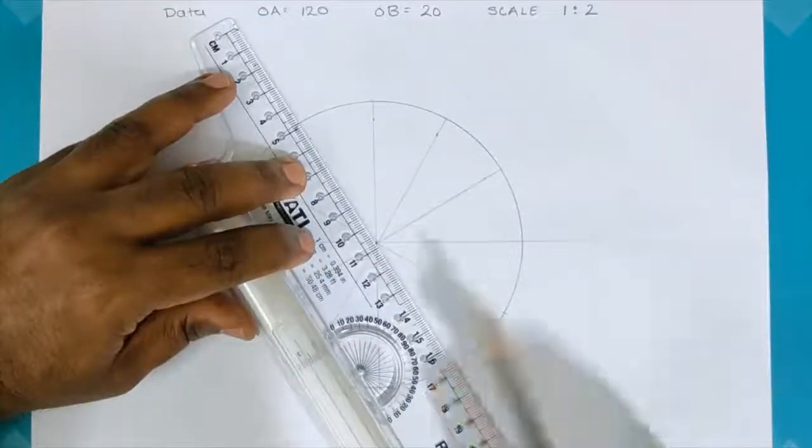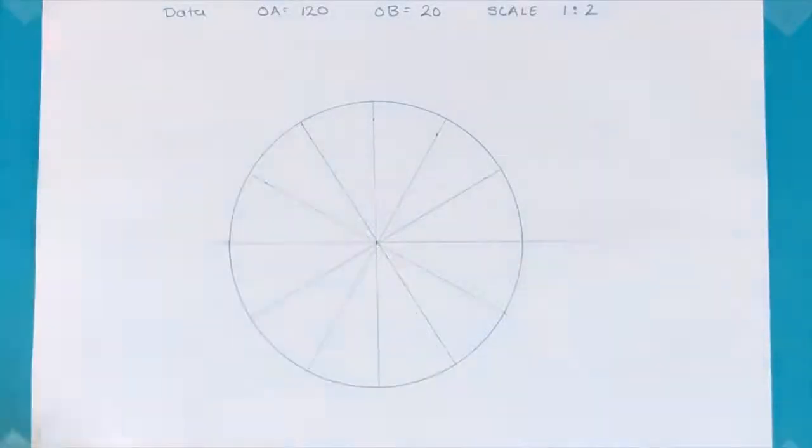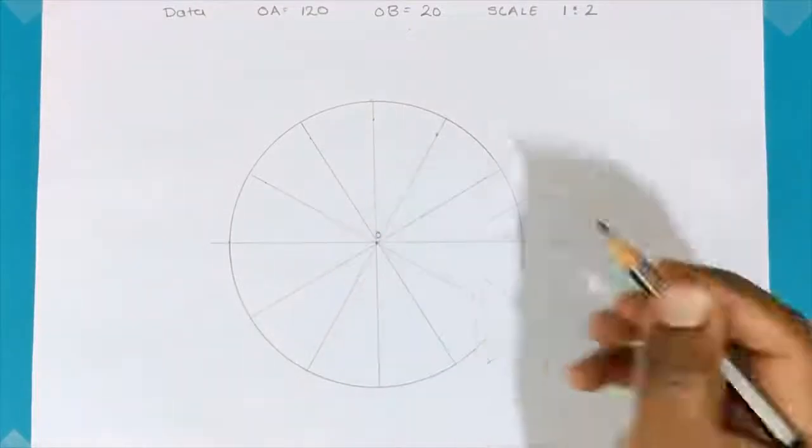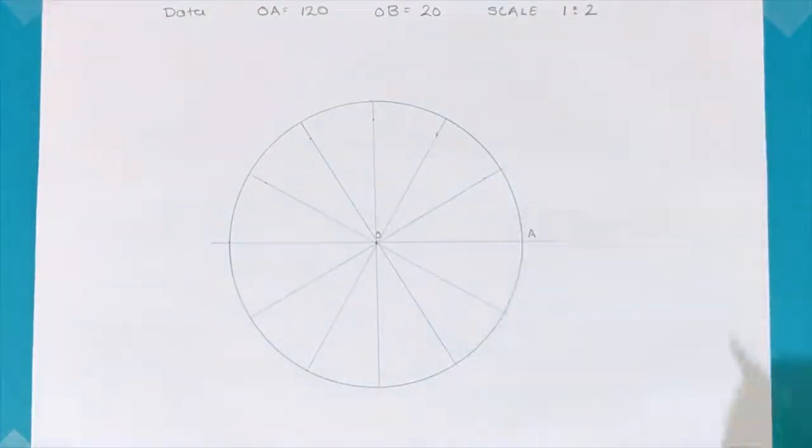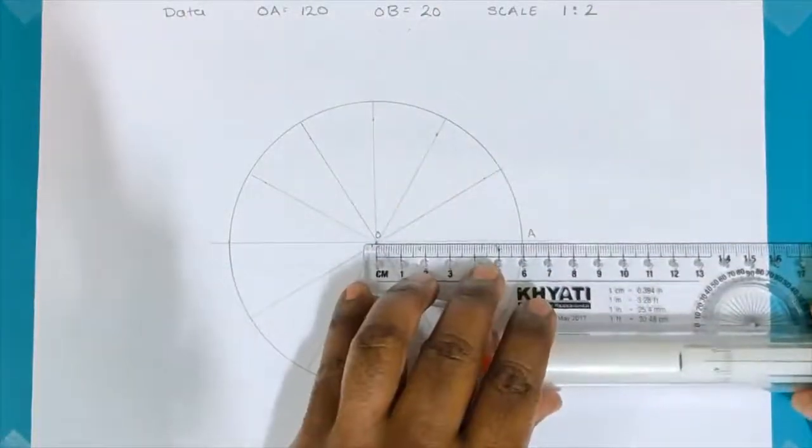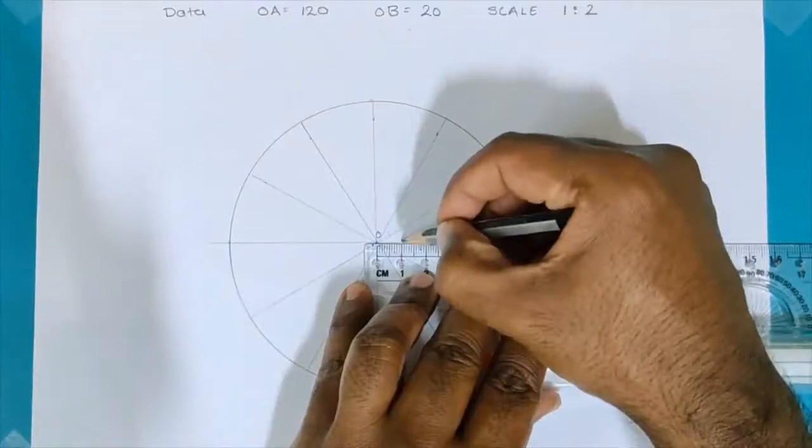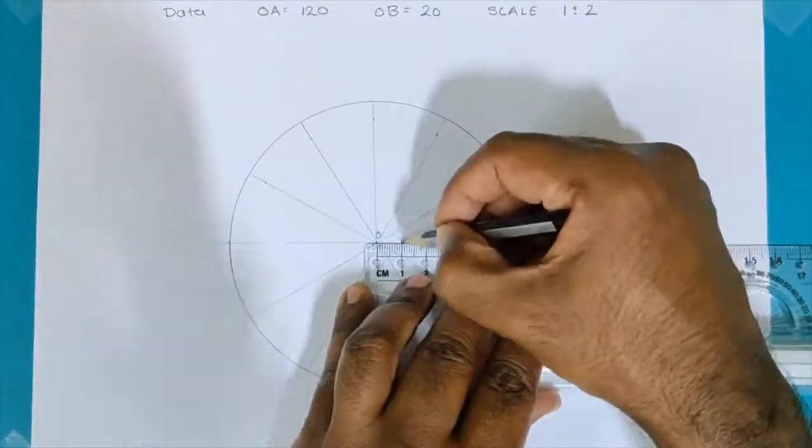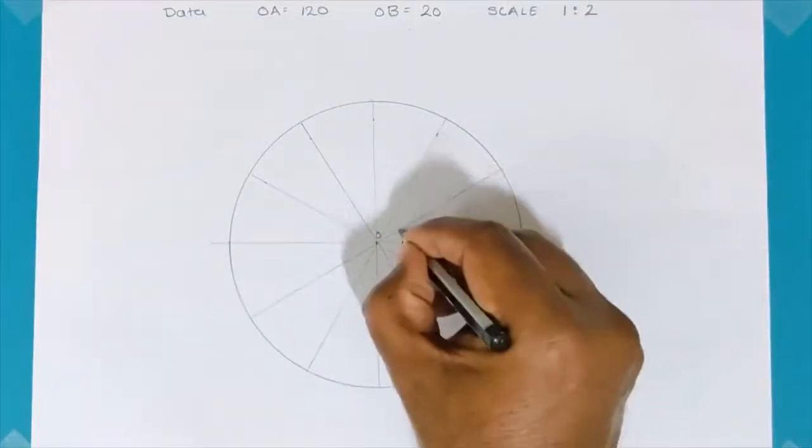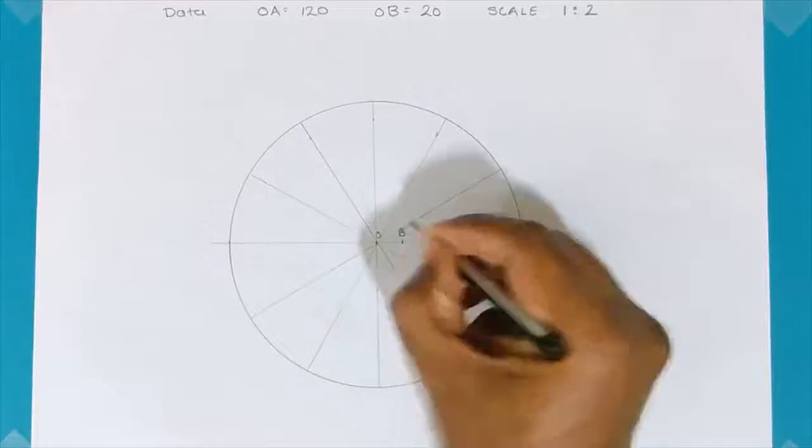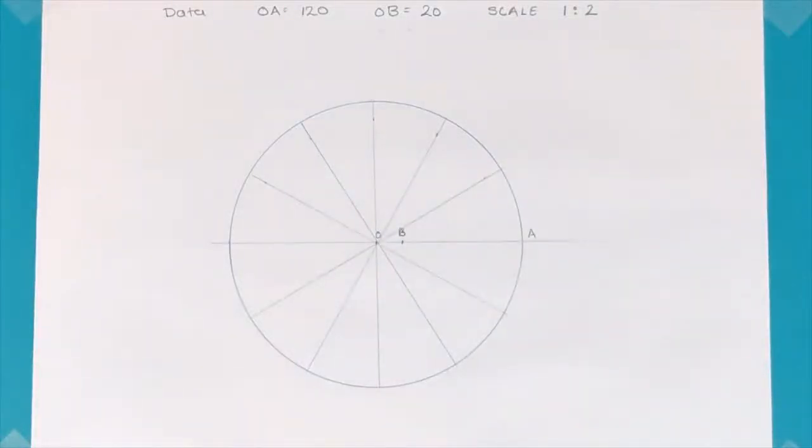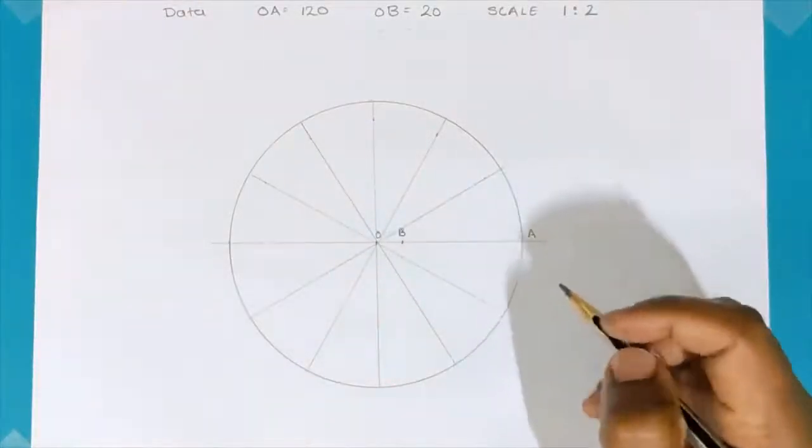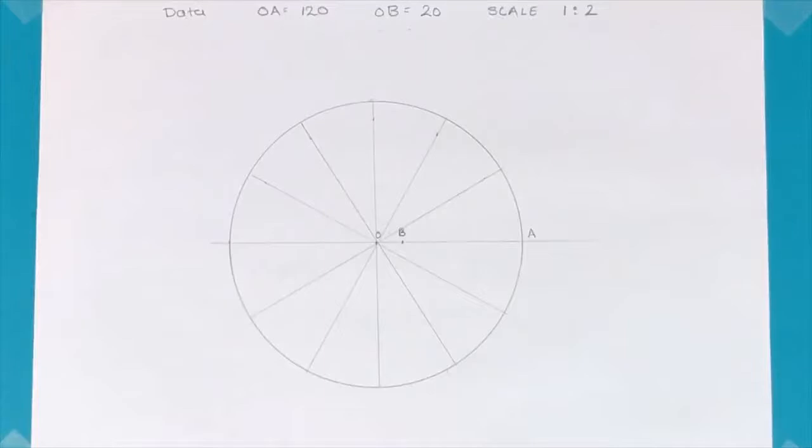Now I have obtained the division of the circle. This point has been named OA. So, I will take O as the pole and A as the outermost radius. Now, I will mark the position of point B. Since I am taking half scale, I will be taking 10 mm on my compass. So, I have taken 10 mm distance from the center and marked point B.